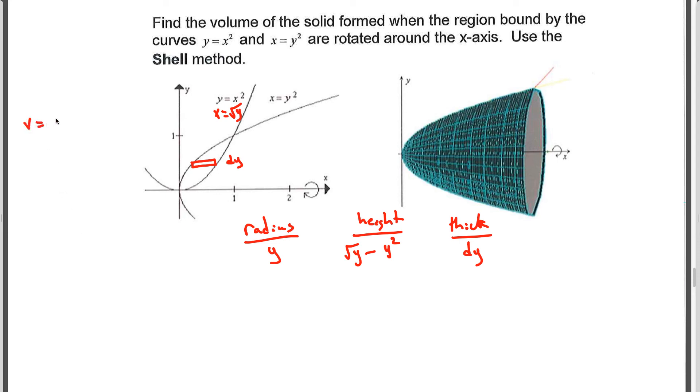So we'll do it over here. Make sure we have enough space. 2π integral from 0 to 1. Remember, we're integrating in the y direction. 0 to 1 of y times y^(1/2) minus y² dy. And that means we have V = 2π times the integral from 0 to 1 of y^(3/2) minus y³ dy. If we simplify, we integrate then 2π times y^(5/2) over 5/2 or times 2/5 minus y⁴/4 from 0 to 1.